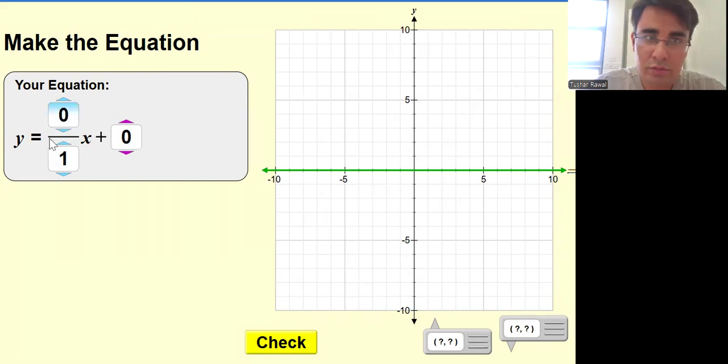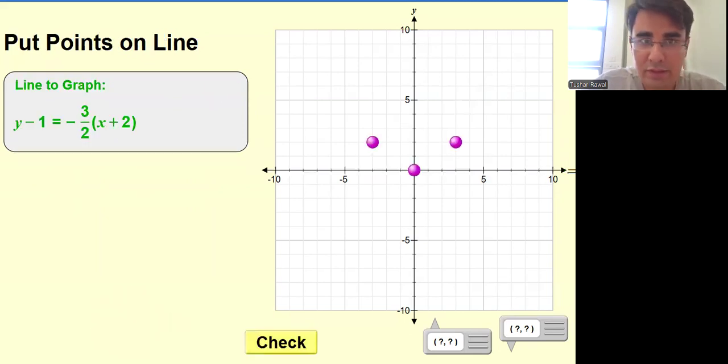Slope should be zero, so zero upon any number, isn't it? What I'm trying to say is it is passing through y equals zero. There should not be x, so zero upon any number. That's the correct answer. Let's go.